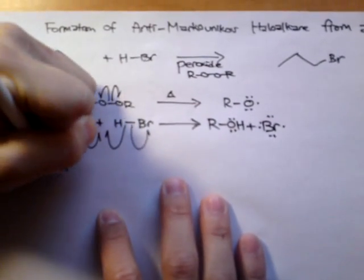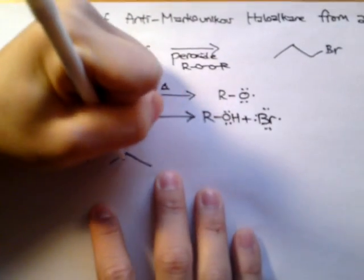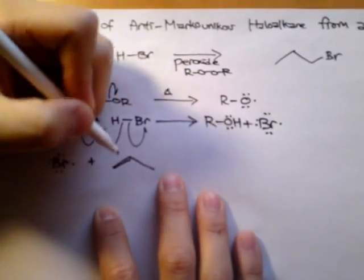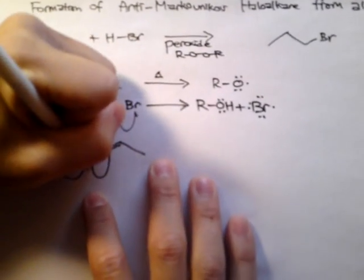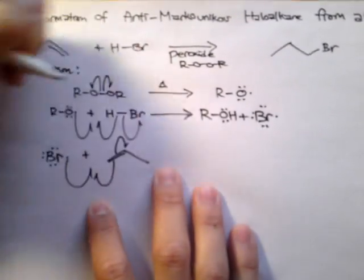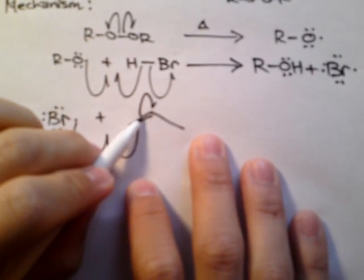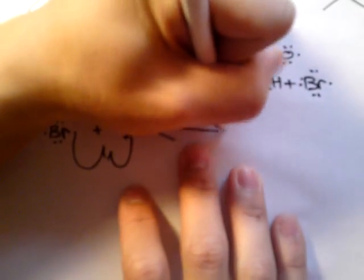After we get the bromine radical, this will go after the alkene. Obviously, it would be added in the primary position instead of the secondary carbon. This bond would break, and the bromine would be attached to this carbon right here. The other electron would go to this carbon, the secondary carbon, and we'll end up with another radical.